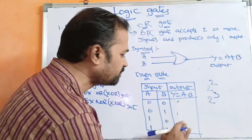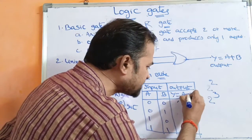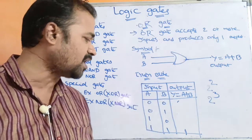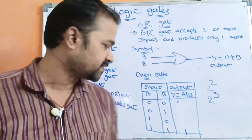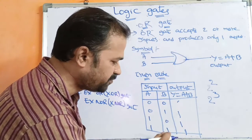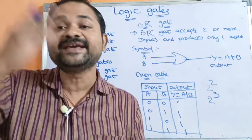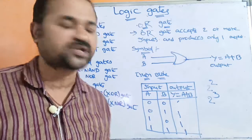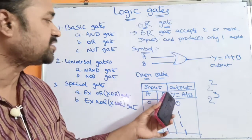Let us see the truth table for the OR gate. We have two inputs: 00, 01, 10, 11, and the output is represented by A plus B. For the OR gate, if one of the input is 1, then the result is 1. So the outputs are 0, 1, 1, 1. We can say that if one of the input is high, then the output is high. If both the inputs are 0, the result is 0; otherwise the result is 1. So this is the truth table for the OR gate.